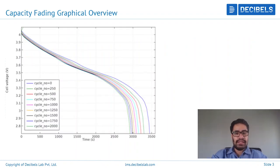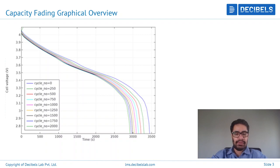Here you can see a graph that corresponds to capacity fading of the cell over repeated usage. At 100% capacity — basically in very fresh condition at zero cycles — you can see that almost 100% of the capacity is available. As the cycle number goes on increasing and the cell gets used more and more, the available capacity of the cell goes on decreasing.